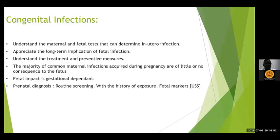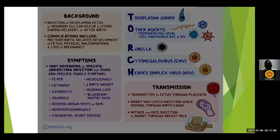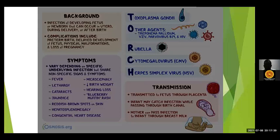Those are the basic things to keep in mind when studying congenital infections. Congenital infections are infections of the developing fetus or newborn that can occur in utero, during delivery, or after birth. The common infections are referred to by the acronym TORCH: Toxoplasma gondii; O stands for other agents such as Treponema pallidum causing syphilis, varicella zoster virus, Parvovirus B19, and HIV; R for rubella; C for cytomegalovirus; and H for herpes simplex virus. Transmission to the baby can occur through the transplacental route, during childbirth, or during the breastfeeding period.